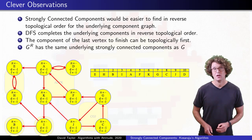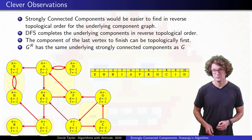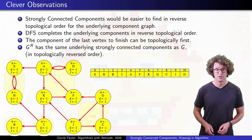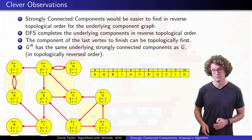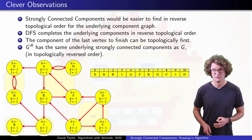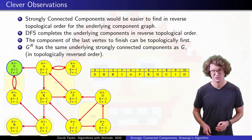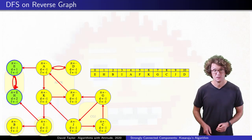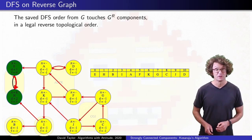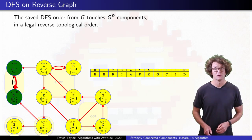That brings us to our last clever observation. If you reverse the graph, the strongly connected components stay the same. Any two vertices that were on a cycle are still on a cycle — the cycle just goes the other way — but the edges in the underlying component graph now go in the opposite direction. The topologically first component, that couldn't be reached by any other component, now cannot reach any other component: it is topologically last. So we can grab vertex E, which we know is in the topologically last component in the reversed graph, search it, and discover its entire strongly connected component. It has no outgoing edges to other components.